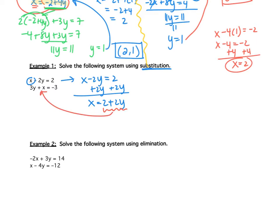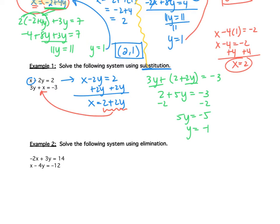In the second equation we have 3y plus x, but our x is 2 plus 2y, and it equals negative 3. Combining like terms, I get 2 plus 5y equals negative 3. Subtracting 2, I get 5y equals negative 5, so y equals negative 1. Be careful — if you find y wrong, you'll get x wrong too. I still need to find x. I can use either of the two original equations or the x equation. I'm going to use the x equation: x equals 2 plus 2 times negative 1, which is 2 plus negative 2, so x equals 0. My point is 0 comma negative 1.